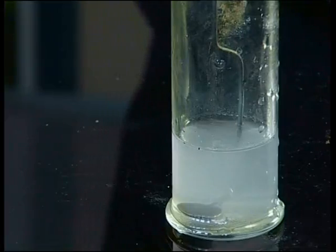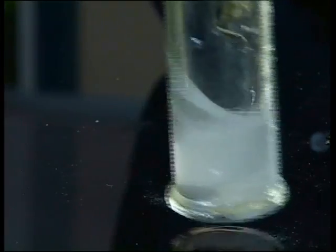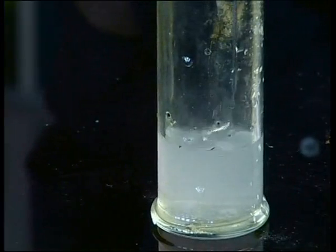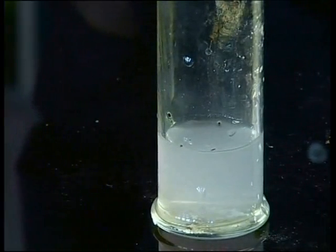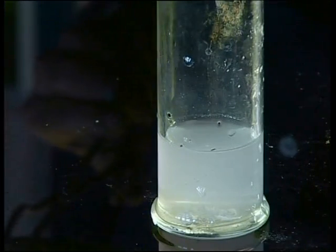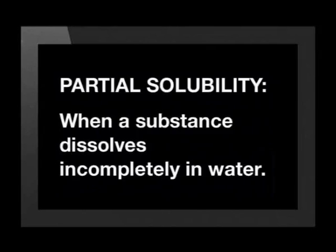Now let's look at the reactions of the alkali earth metal oxides with water. When water is added to magnesium oxide, we see that the water turns a milky white. This means that only some of the solid dissolved in the water — we say that magnesium oxide is partially soluble. Partial solubility means when a substance dissolves incompletely in water. We know that magnesium oxide is partially soluble because we can see the little bits of undissolved oxide floating in the water.